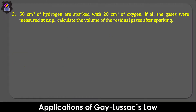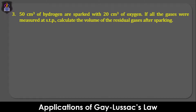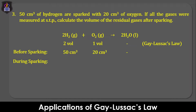Question three: 50 cm³ of hydrogen are sparked with 20 cm³ of oxygen. If all the gases were measured at STP, calculate the volume of the residual gases after sparking. This problem is similar to the last question except that the temperature of reaction is below 100 degrees Celsius, meaning that water will be formed and not steam, and the oxygen will be used up and not hydrogen based on the mole ratio. Before sparking, there are 50 cm³ of hydrogen and 20 cm³ of oxygen available.